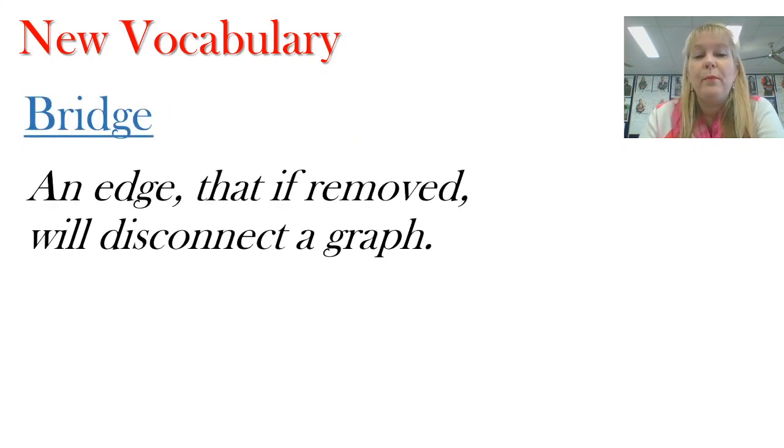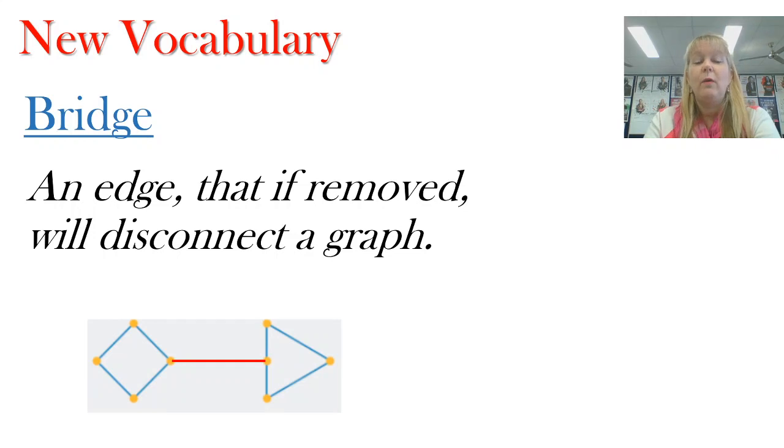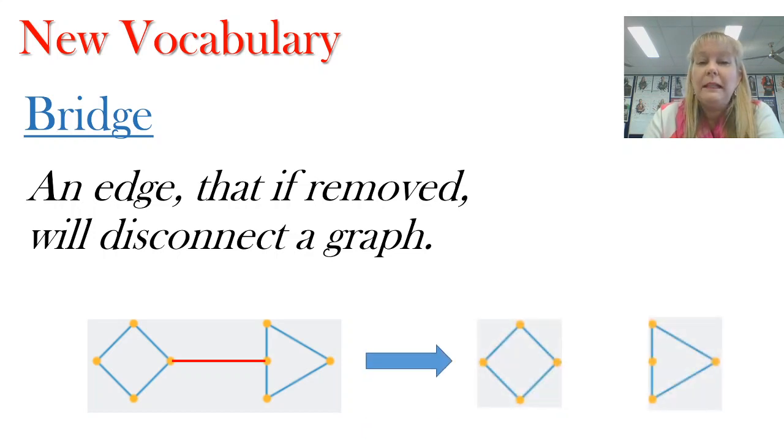We've also got something called a bridge and that is an edge that if I remove it from the network will disconnect the graph. So in this case I've got two parts to the network I've got the diamond and the triangle and they're connected by the bridge which is shown in red. But if the bridge removed then I would end up with two completely separate networks.